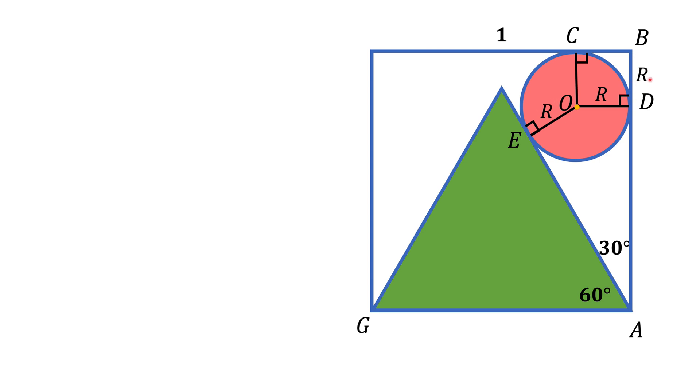But if BD is R, AD should be 1 minus R, because whole AB is 1. But now, let's look again at this circle we have, and the angle EAD, this angle of 30 degrees. Our circle is inscribed into the angle. Inscribed circles have a property that the distance from the points of tangency, point D and point E, to the vertex of the angle should be the same. So it means that AD should be equal to AE, and it will be equal to 1 minus R.